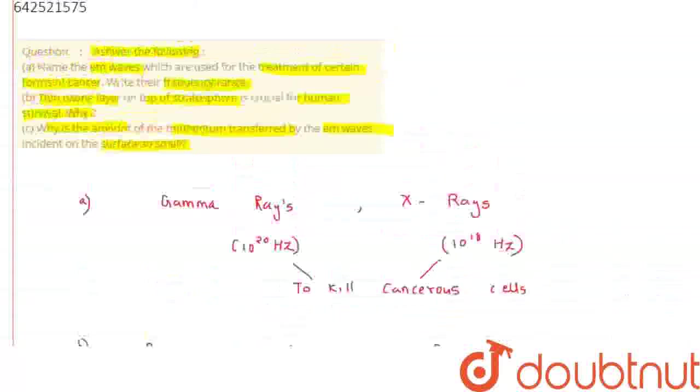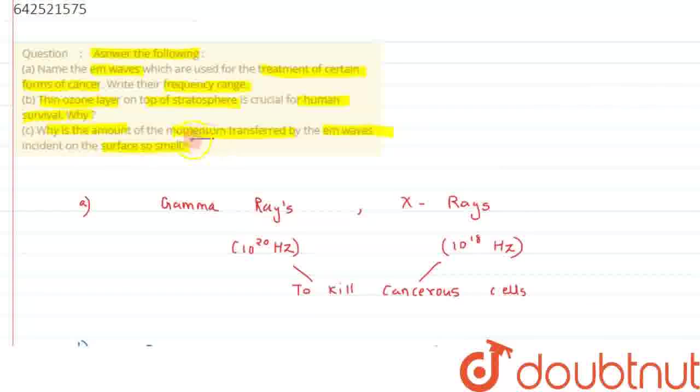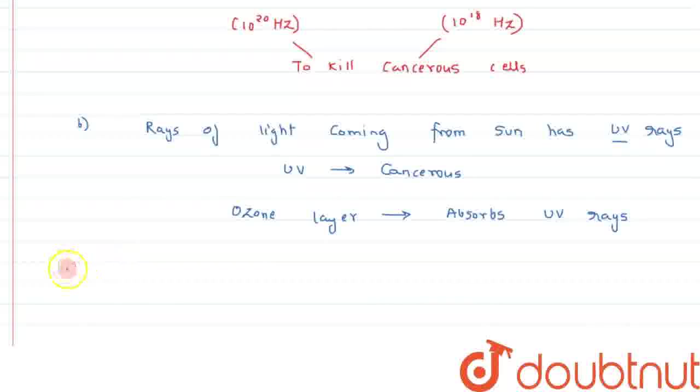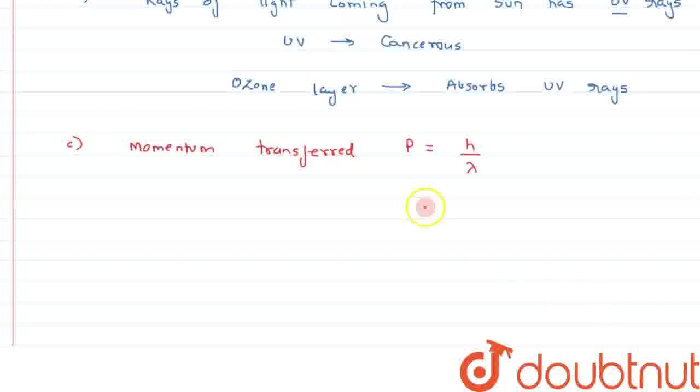So now, let's move on to the final part of the question, that is, why is the amount of momentum transferred by electromagnetic wave so small? So, we know about momentum transferred, we can write momentum transferred, that is P, is given by the formula H by lambda, where H is Planck's constant, lambda is the wavelength of light or electromagnetic wave in this case.